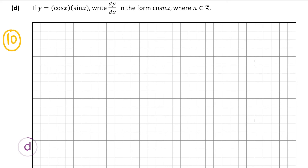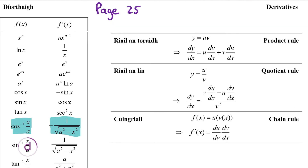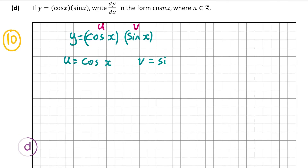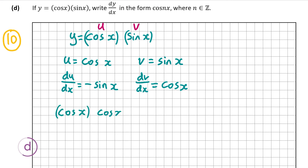We're told that if y equals cos x times sine x, we have to write dy/dx in the form cos nx where n is an integer. To differentiate that we use the product rule, which is on page 25 of the formula tables book. We set u equal to cos x and v equal to sine x, so du/dx is minus sine x and dv/dx is cos x. Applying the rule: u times dv/dx plus v times du/dx gives cos x times cos x plus sine x times minus sine x, which is cos squared x minus sine squared x.